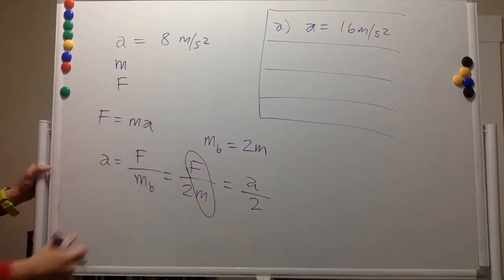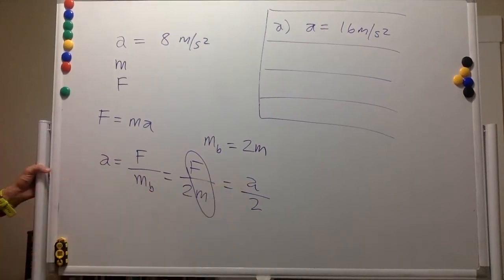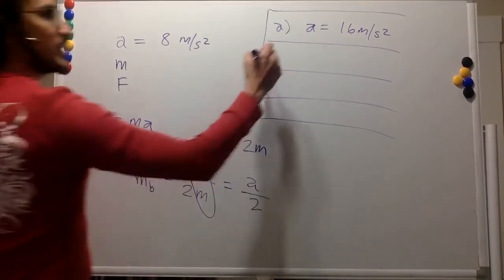So if the original acceleration is 8 meters per second squared and you divide by 2, you get 4 meters per second squared for part B.